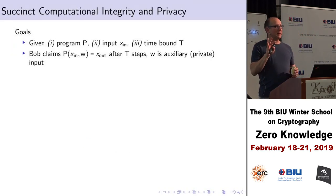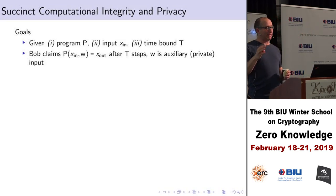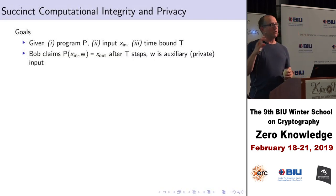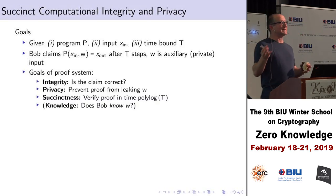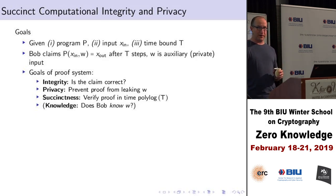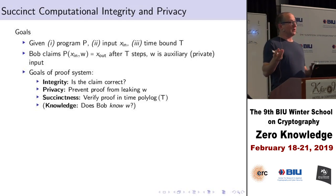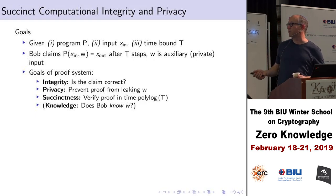It's all about getting succinct proofs and succinct verification time. The goal is: we're given a general program, an input, and a time-bound, and Bob claims that the program on the input and auxiliary input — which may be private — reaches a certain output after T steps. We want to build a system where truisms can be proved and verified efficiently, and falsities are going to be rejected.